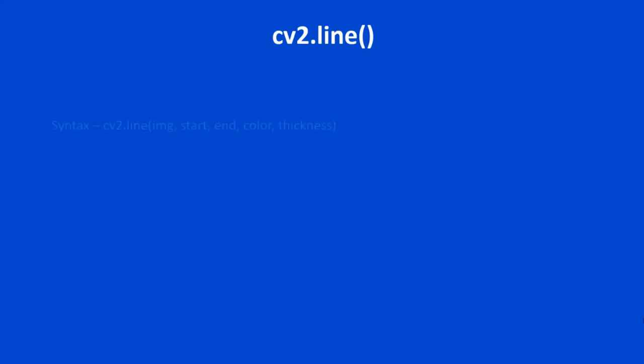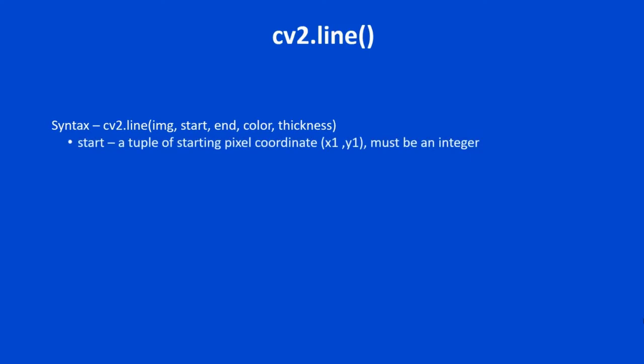Now let us look into cv2.line and its syntax. The syntax is: cv2.line(image, start, end, color, thickness). The start and end are new parameters. Start is a tuple of the starting pixel coordinate (x1, y1), and end is a tuple of the ending pixel coordinate (x2, y2). These must be integers — only integer values are accepted; passing a float will throw an error.